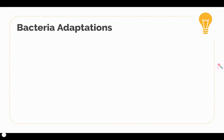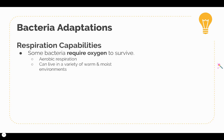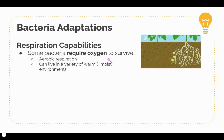We're going to look at three adaptations of bacteria. One thing to keep in mind is that they metabolize for energy to make ATP, and there are two ways they can do this. Some bacteria require oxygen to survive and use the process of aerobic respiration to live and produce ATP. This kind of bacteria generally lives in warm and moist environments, typically in the soil.